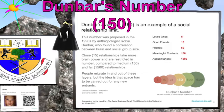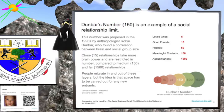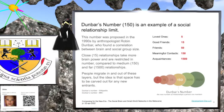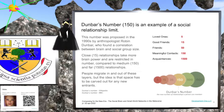Dunbar's number, 150, is an example of a social relationship limit. It states that the maximum number of meaningful relationships an average human being can sustain is 150. Dunbar theorized that this limit was a direct function of human neocortex size. According to the theory, the tightest circle has just five people — loved ones — followed by successive layers of 15 good friends, 50 friends, 150 meaningful contacts, 500 acquaintances, and 1,500 people you can recognize. People migrate in and out of these layers, but the space has to be carved out for any new entrant.